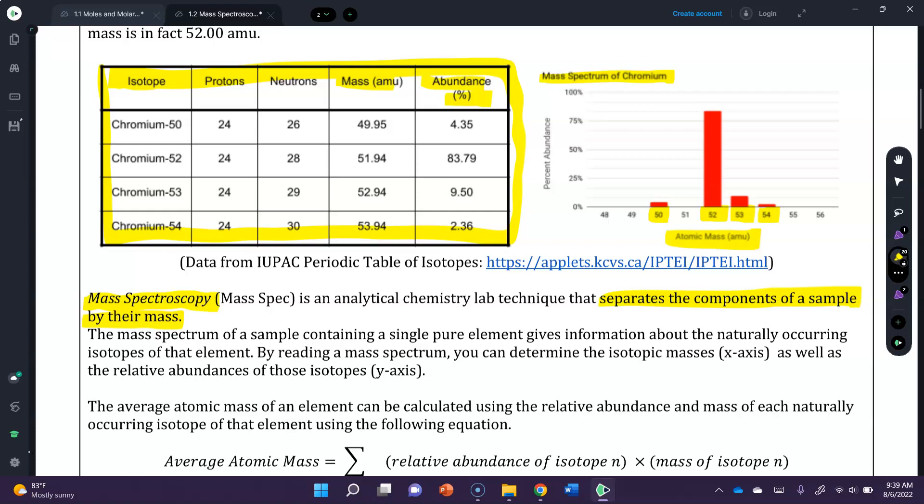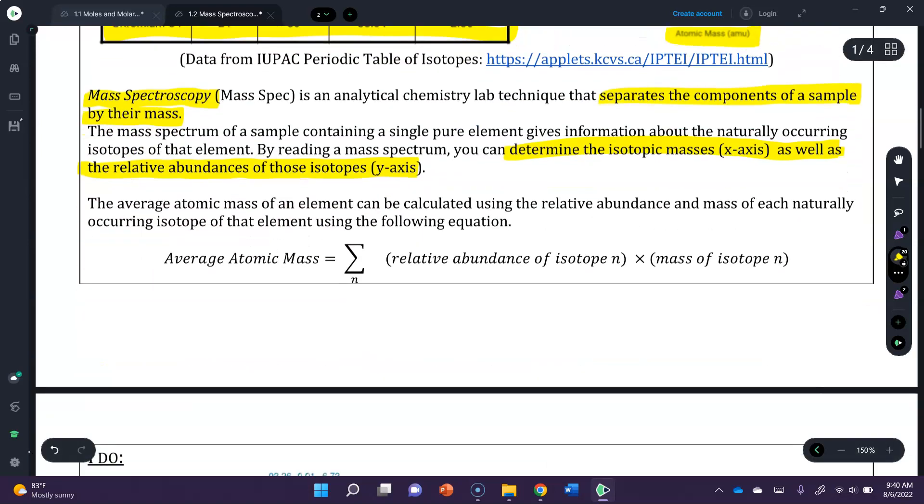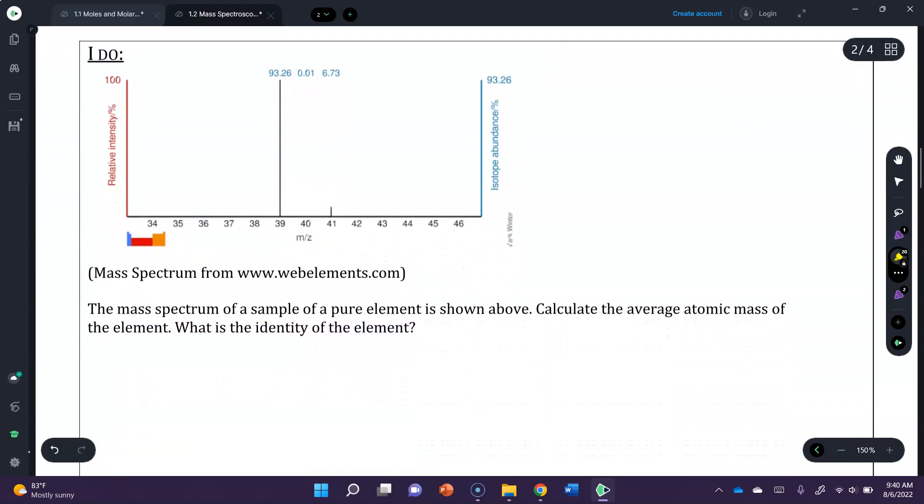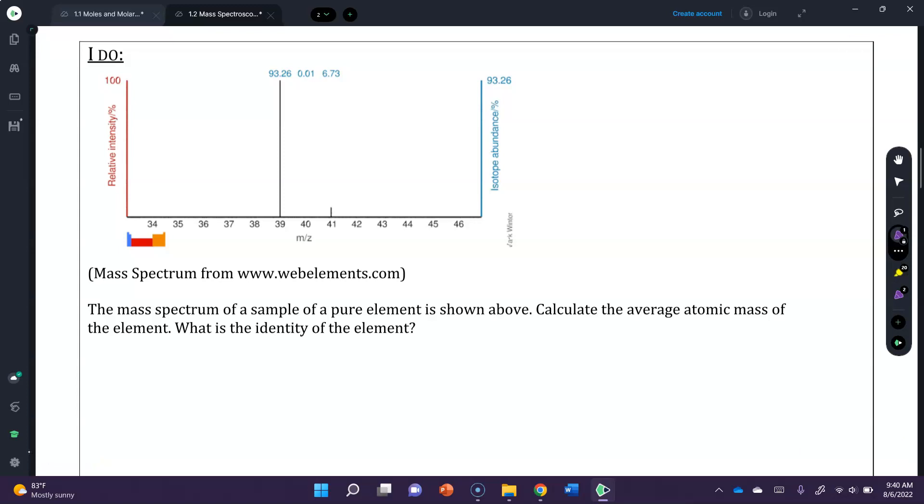By reading the mass spectrum, you can determine the isotopic mass, which is on the x-axis, as well as the relative abundance of those isotopes on the y-axis, which is what I was showing you above. The average atomic mass of an element can be calculated using the relative abundance and mass of each naturally occurring isotope of that element using the following equation here. And we are going to practice with that. And if you guys hear my children in the background, it's just their special debut. They like to play and my office is right by their playroom. So enjoy the little chaos in the background. And if it's super distracting, I apologize.